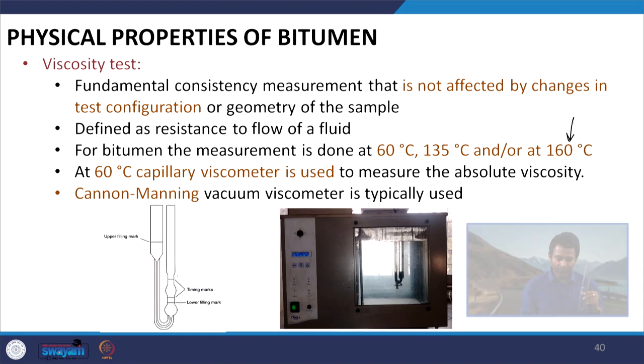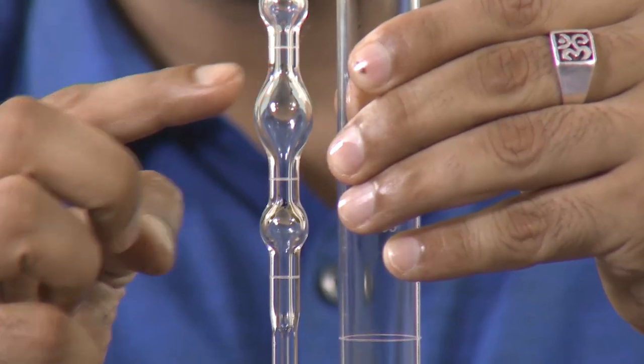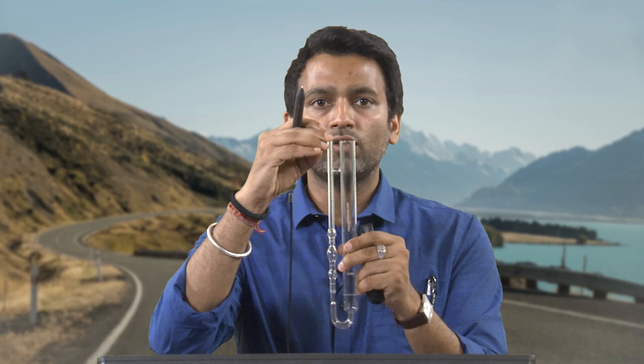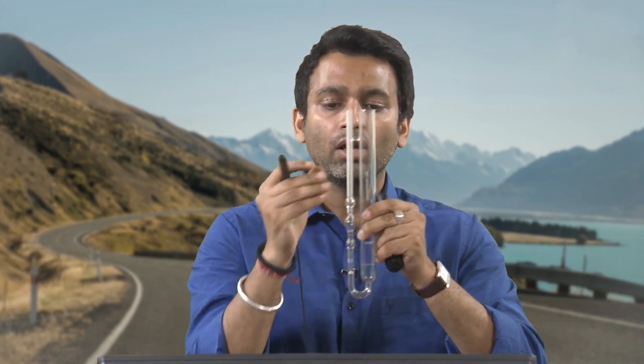The viscometer has timing marks at different locations. After the bitumen sample is poured and conditioned, a partial vacuum is applied from the lower end to start the test. This vacuum is required because at 60°C bitumen is too stiff to flow on its own due to gravity. We then record the time required for the bitumen to flow between the timing marks. This recorded time is multiplied by the calibration factor of the tube to calculate viscosity in poises or centipoises.